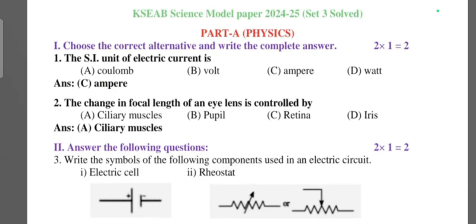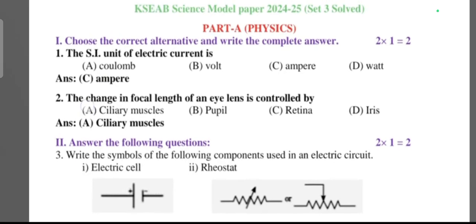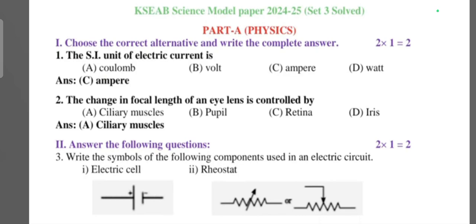First main, Physics Part A, two multiple choice questions each carries one mark. The SI unit of electric current is ampere. The change in focal length of an eye lens is controlled by ciliary muscles. Next question: answer the following. Write the symbol of the following components used in electric circuit: electric cell, this is the answer. Then rheostat, this is the answer.